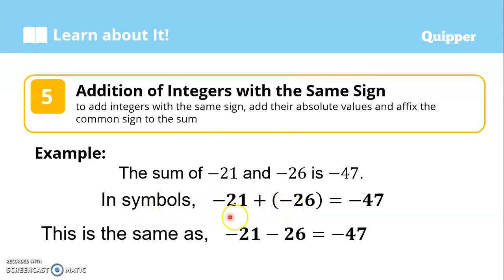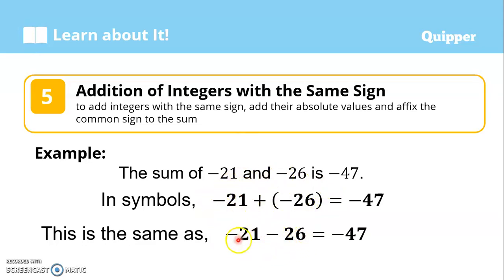In symbols: negative 21 plus negative 26 equals negative 47. Note that when a positive sign and a negative sign are adjacent, that becomes negative. So this is the same as negative 21 minus 26. Common sign is negative, so we add 21 and 26 to get 47, giving us negative 47.